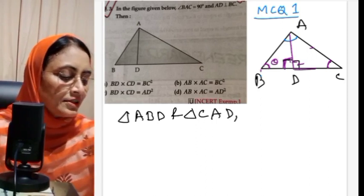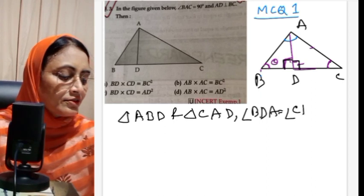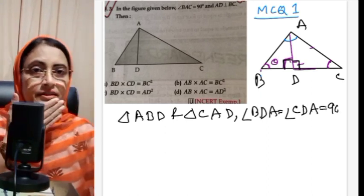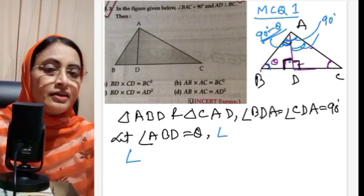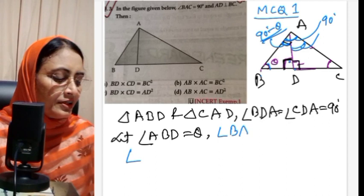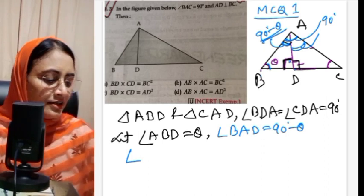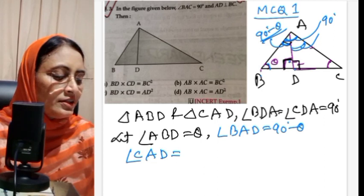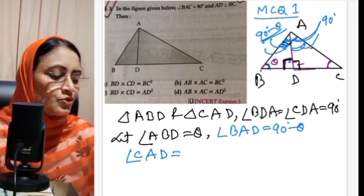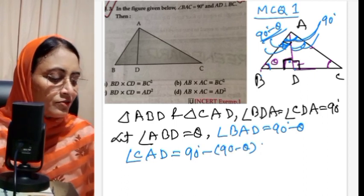This angle is equal to this angle — angle BDA is equal to angle CDA, both equal to 90 degrees. Since AD is perpendicular, if we call angle ABD theta, then angle BAD is equal to 90 minus theta, and angle CAD is equal to 90 minus (90 minus theta), which equals theta.